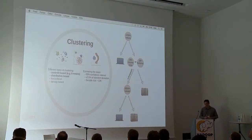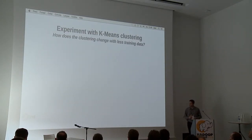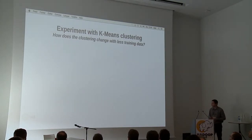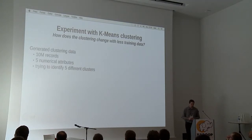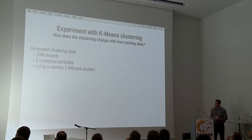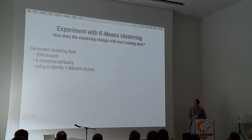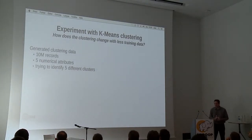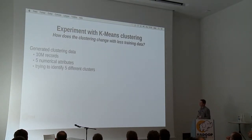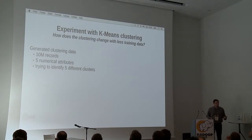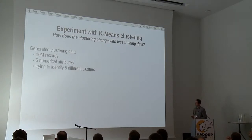After follow-up discussions from last year's talk, people wanted to see experiments, so I started doing experiments with clustering. I'm not even using a very big dataset — I generated a basic dataset of 10 million records with 5 numerical attributes and ran a clustering algorithm trying to identify 5 different clusters. This dataset would fit on a single computer, but most clustering algorithms would take quite some time to execute fully on it because these machine learning algorithms are not linear in execution time with the number of records.